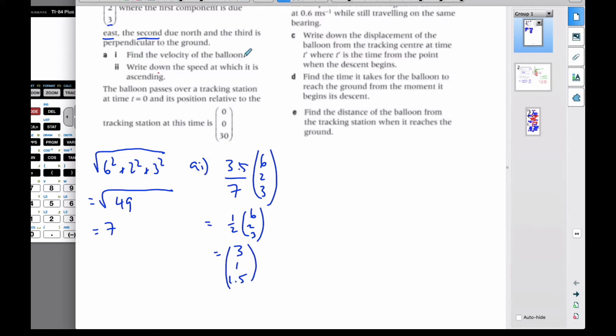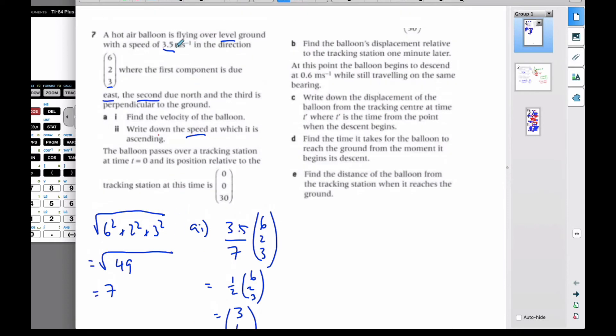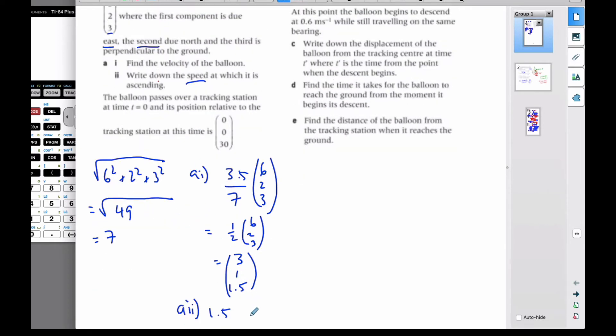So this is the velocity of the balloon. Now, part 2 says, what speed is it ascending? That means how fast is it going up into the sky. Well, the 1.5 is the ascending component. That's the speed, 1.5 meters per second going up. That's a tricky one.